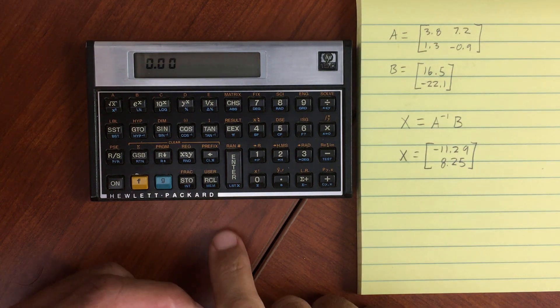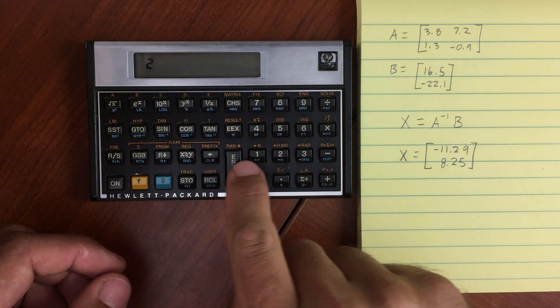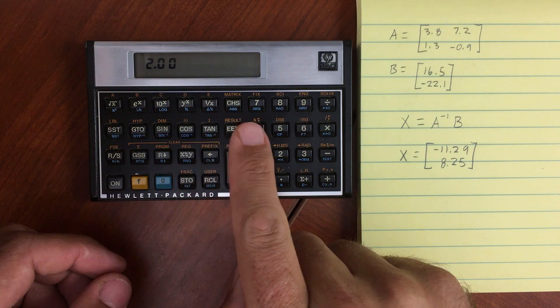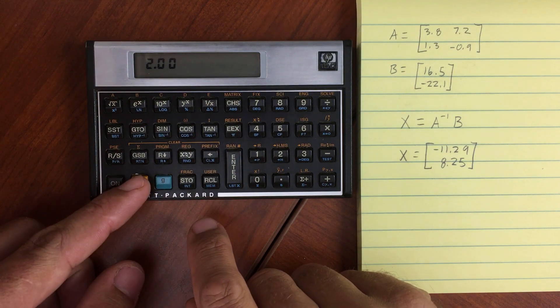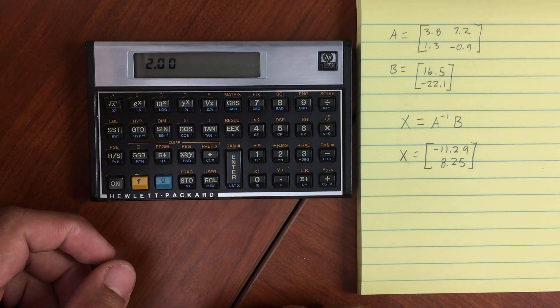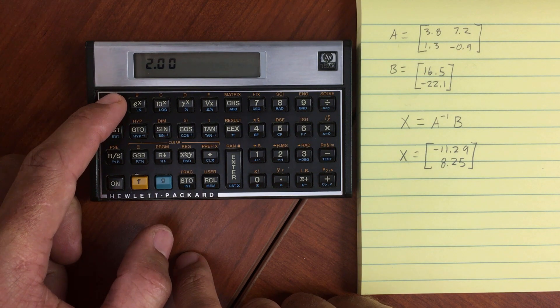So let's go ahead and enter matrix A. Now we need to tell it what kind of matrix, what dimensions it's going to be. So let's hit 2 and then enter. Now we have 2 in the Y register and 2 in the X register of the stack. And then let's hit dimension, and then tell it which matrix we're doing it on. So let's do A.